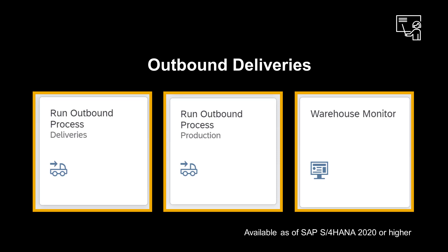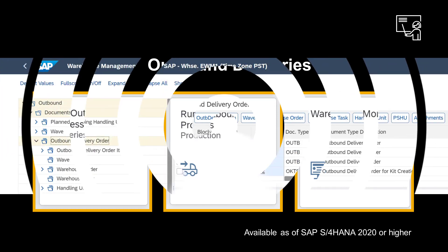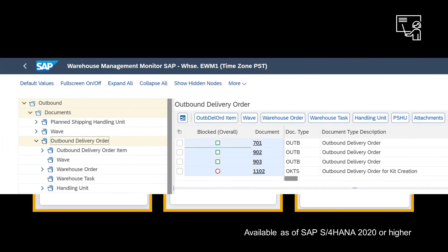For outbound deliveries, you can use the Run Outbound Process apps for deliveries and production, respectively. In addition, the Warehouse Monitor under Outbound, Documents, Outbound Delivery Order.